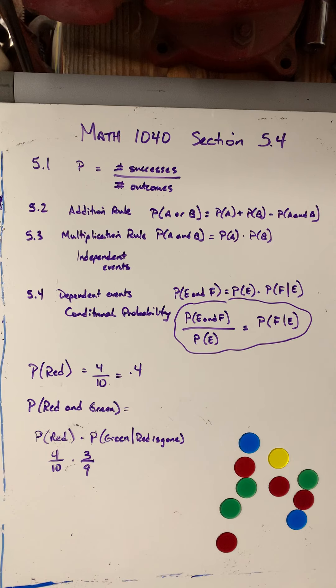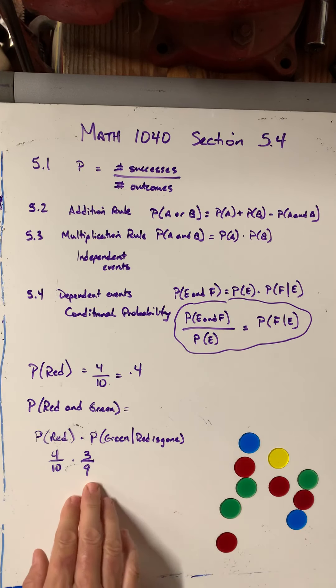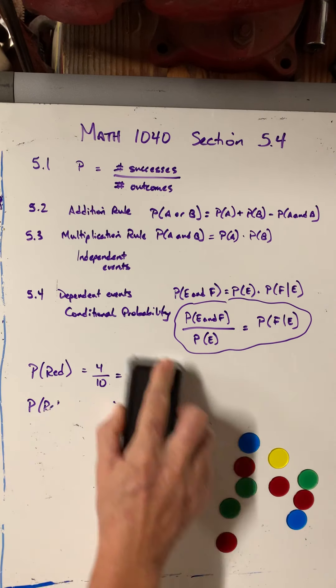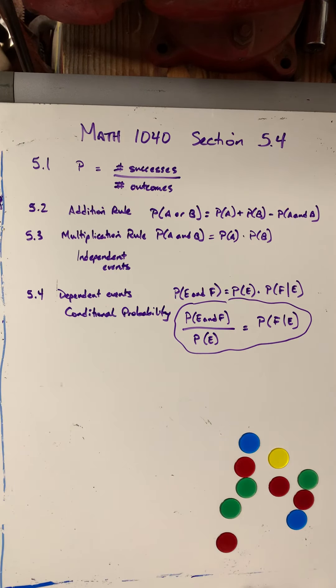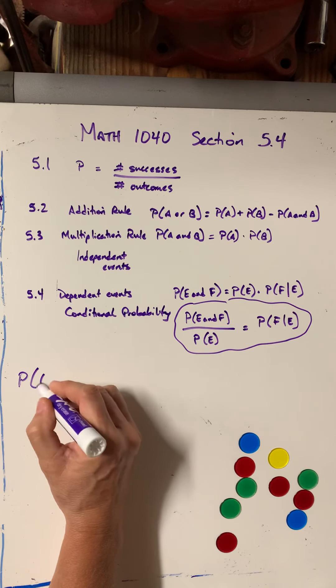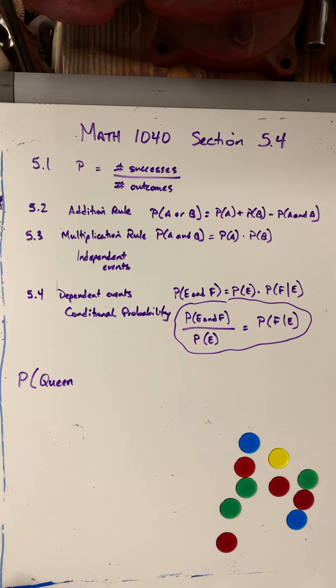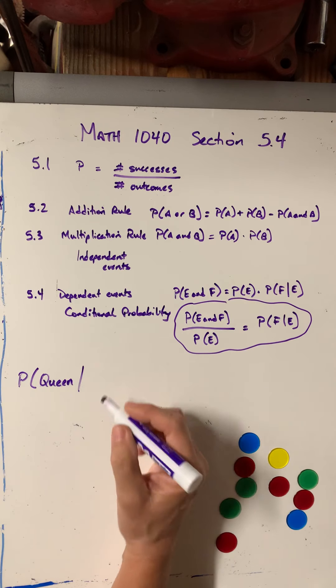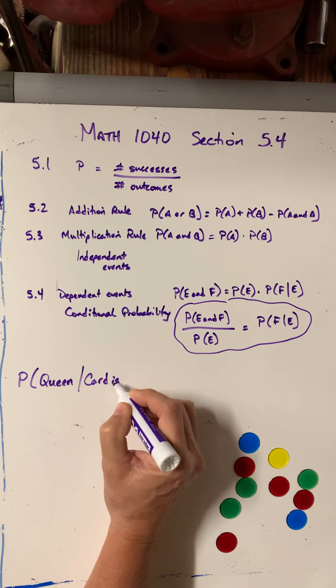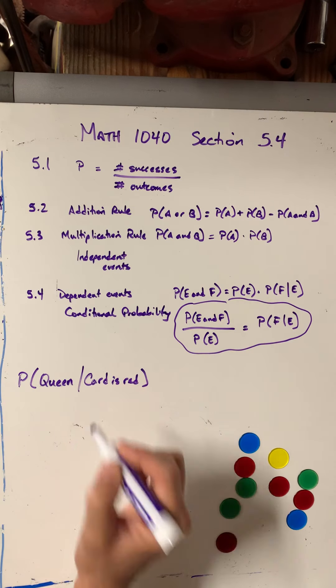But otherwise, if you can actually visualize what's happening, then I think it's easier to just think about what's happening to your probability as things get reduced in your sample size. So let's do another example that's a little more intuitive and let's say we did something like the probability of getting a queen out of a deck of cards given that the card is red.